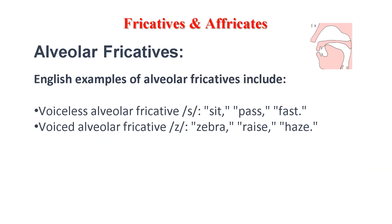English examples of alveolar fricatives include: the voiceless alveolar fricative, as in the words sit, pass, and fast; and the voiced alveolar fricative, as in the words zebra, raise, and haze.